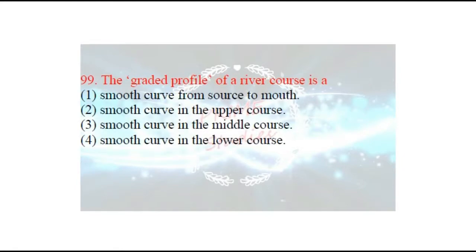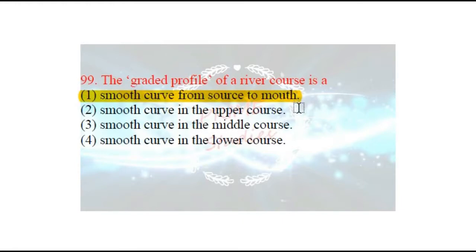Next question: the graded profile of a river course is what? River ki jo graded profile hai, woh kya hoti hai? The graded profile of a river is the path it takes from its source to its mouth — udagam sthan se mohane tak. The options are: smooth curve from source to mouth, smooth curve in the upper course, smooth curve in the middle course, or smooth curve in the lower course. The right answer is smooth curve from source to mouth — source se lekar mouth tak, jo nadi ki graded profile hoti hai, woh bilkul smooth hoti hai.